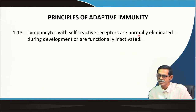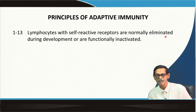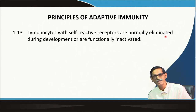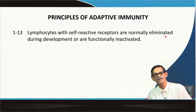Lymphocytes with receptors for self are normally eliminated during development, as we discussed, or are functionally inactivated. Even if they are not deleted — if they do not get the signal for death — they will be functionally inactivated. We call this anergy. We will discuss this later, but they will not carry out any further activity in future — their machinery will be blocked.